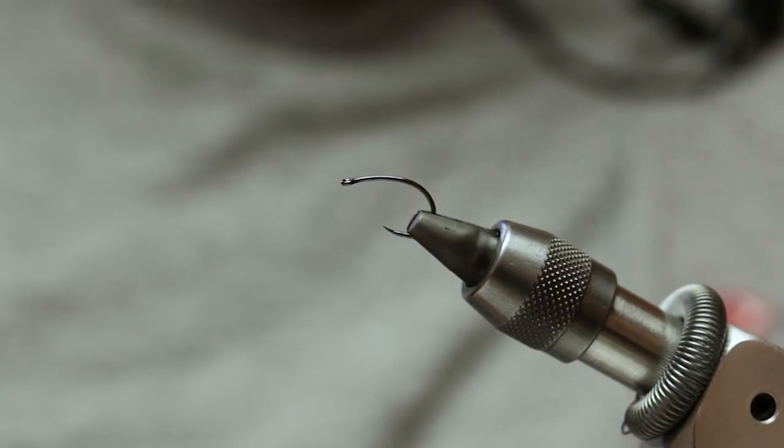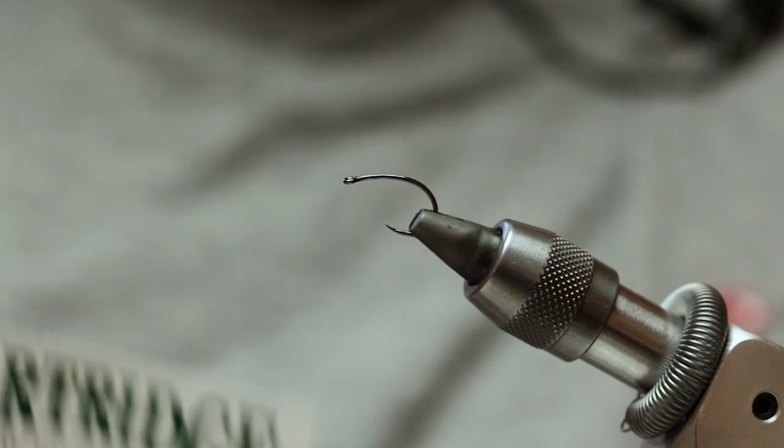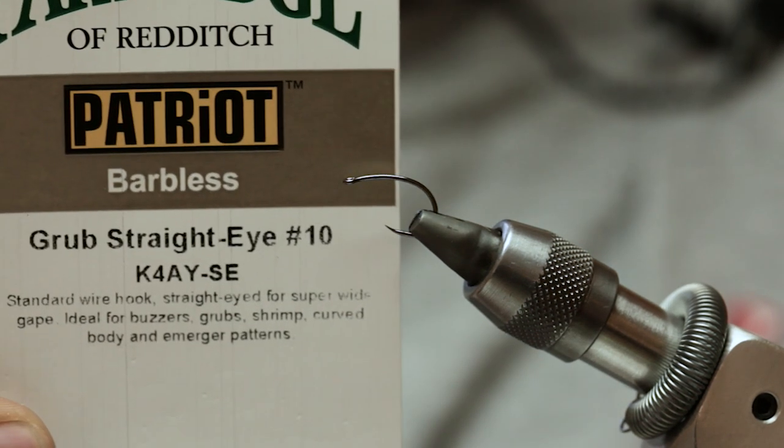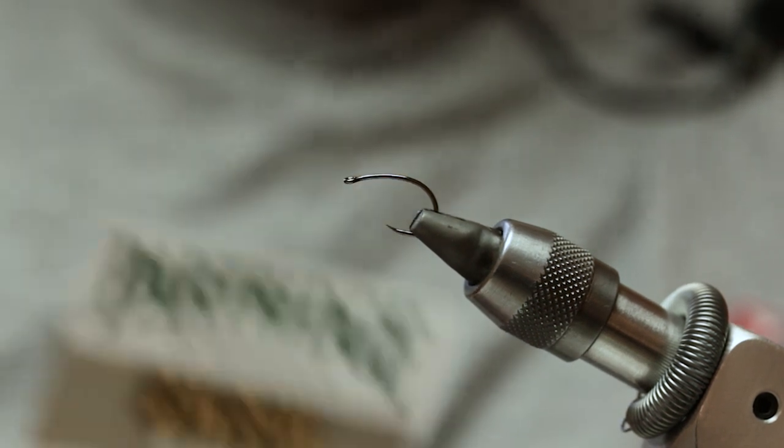So the hook in the vise is the new straight-eyed grub from Partridge. There's the code there. Cracking hook, very strong.